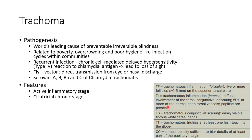TS is trachomatous conjunctival scarring, with easily visible fibrous white tarsal bands. TT is trachomatous trichiasis, with at least one lash touching the globe. CO is corneal opacity, sufficient to blur details of at least part of the pupillary margin.